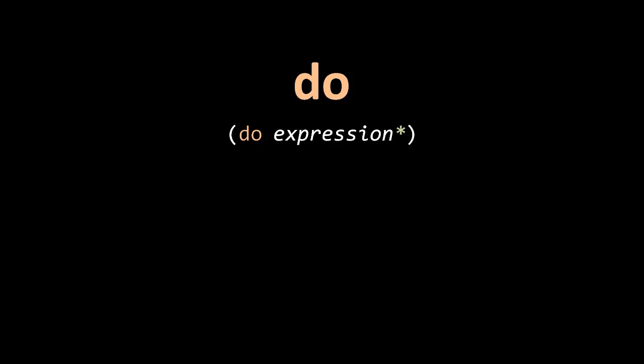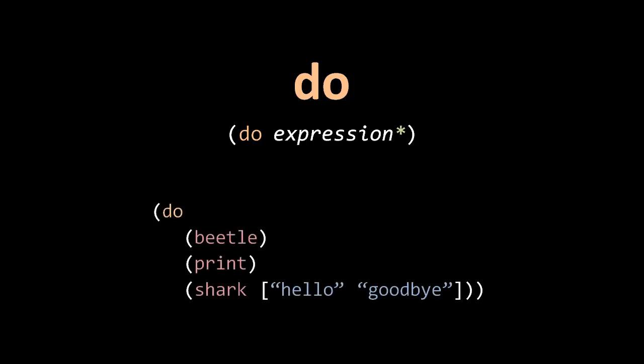Let's continue introducing the special forms. The special form do simply takes a list of expressions, often called the body of the do. The expressions of a do form are simply executed in order, and the do itself returns the value returned by the last expression. So here, first beetle is called, then print, and then shark — and whatever shark returns, that's what the do returns.